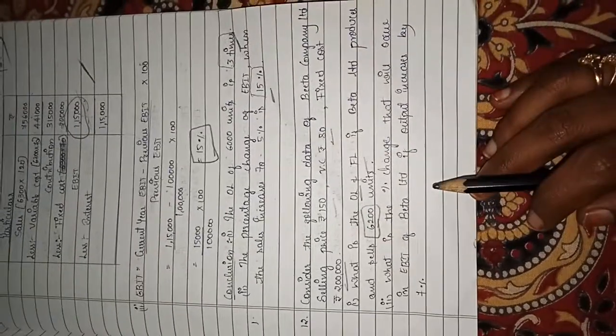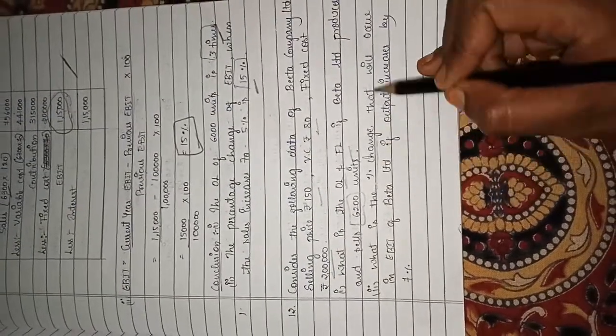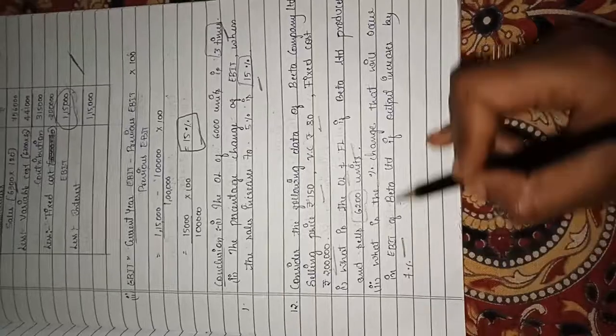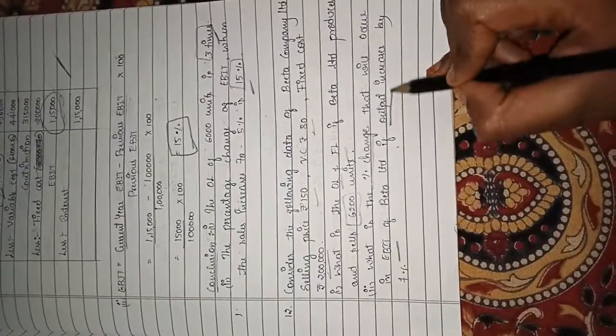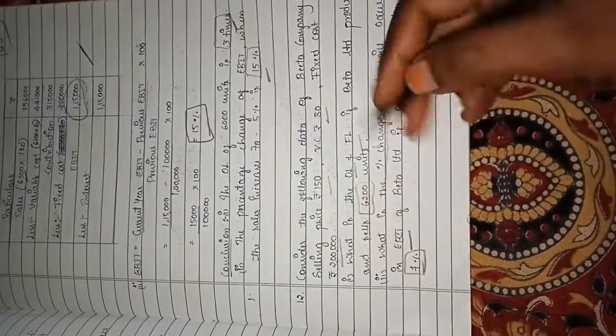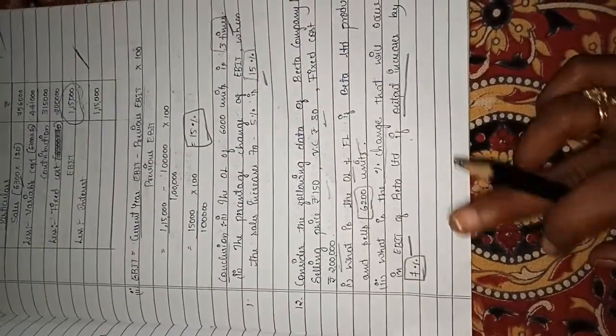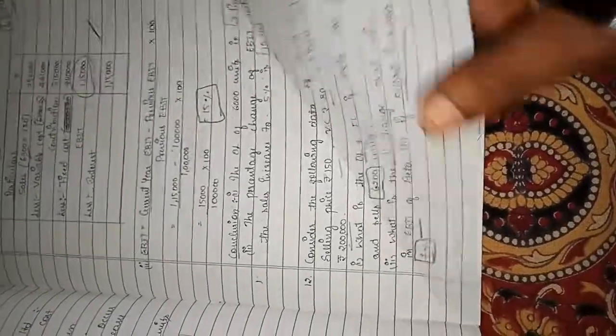Question number two asks: what is the percentage change that is going to occur in EBIT if the output is increased by seven percent? So for 6,200 units with a seven percent increase, we need to find what percentage change occurs in EBIT.